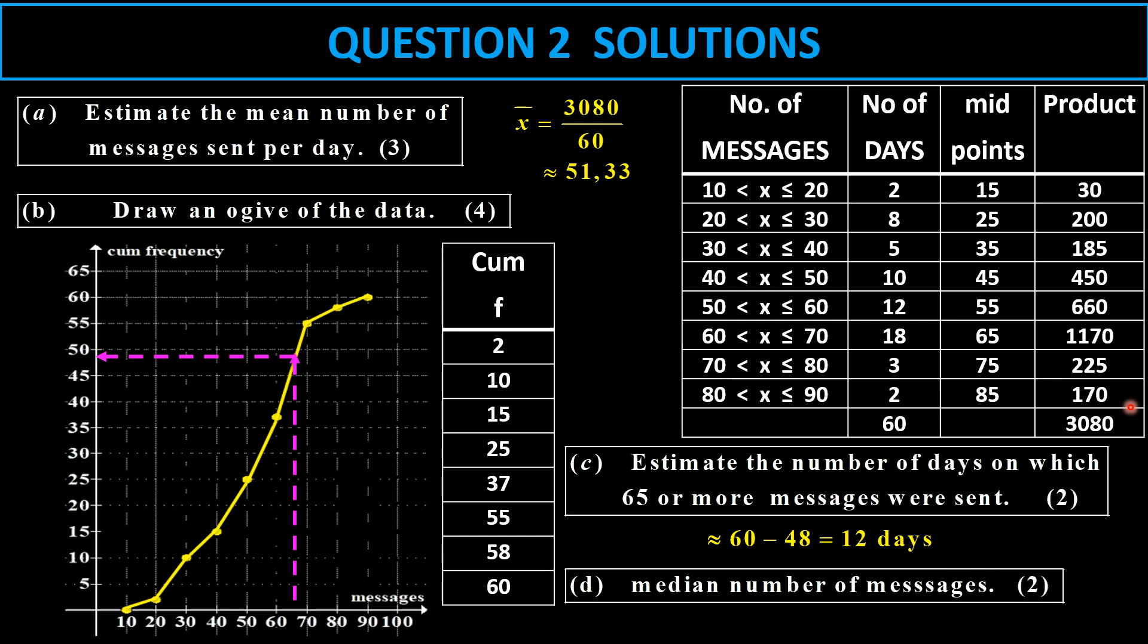The median, median is 50% of the 60, which is 30. So from 30, I take a reading and I can estimate that, let's say it is 55.